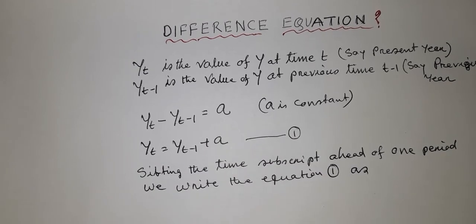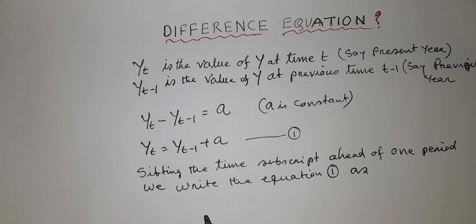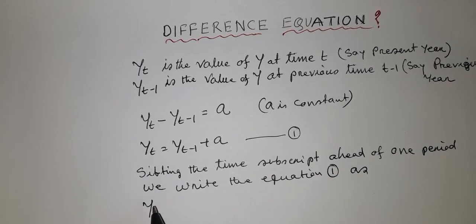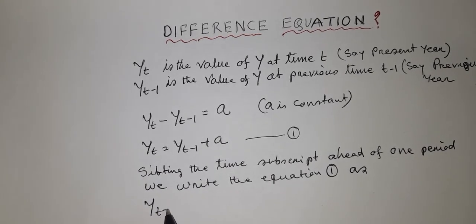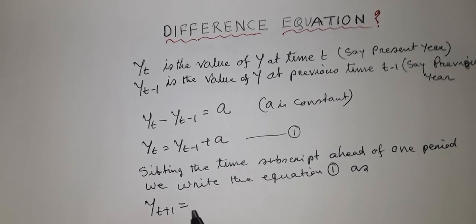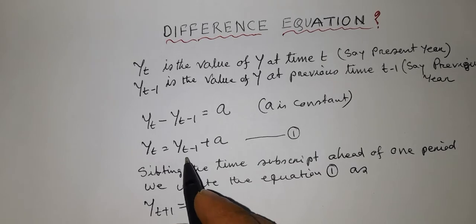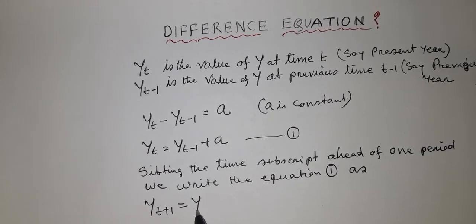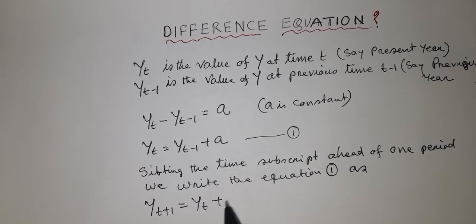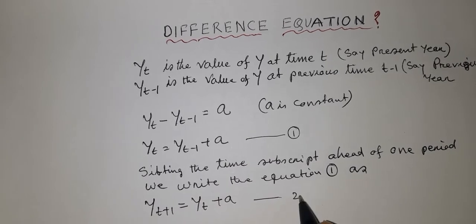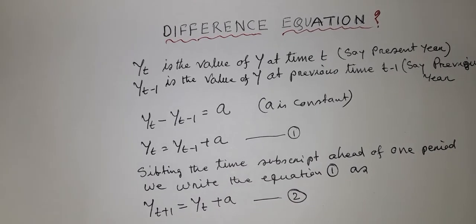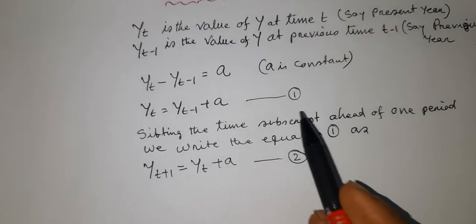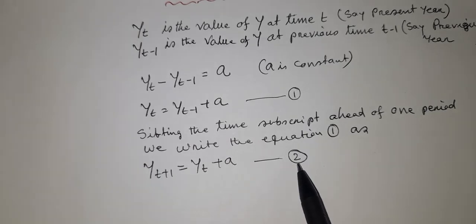Shifting the time subscript ahead by one period, we write equation 1 as: instead of t, we write t+1, and instead of y_{t-1}, we write y_t plus a — this is equation 2. Both equation 1 and equation 2 are difference equations.